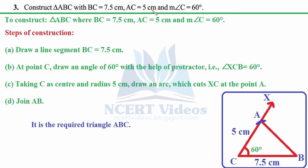In this question we construct triangle ABC where BC equals 7.5 cm, AC equals 5 cm, and angle C equals 60 degrees. To identify where the angle goes: C is common to both sides BC and AC, therefore the angle must be at C. Otherwise the triangle cannot be constructed using any congruence criteria studied in the previous class.